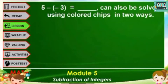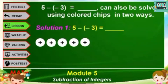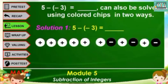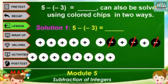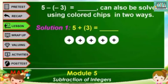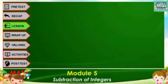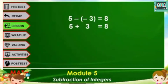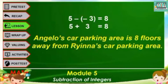For 5 minus negative 3: the first solution is to represent 5 using 5 white chips. To subtract negative 3, remove 3 black chips — but since there are no black chips, add 3 sets of neutral chips. Now remove the 3 black chips, leaving 8 positive chips. The second solution is 5 plus 3: represent 5 white chips, add 3 white chips, giving 8 white chips. Thus, 5 minus negative 3 equals 8, and 5 plus 3 equals 8. Therefore, Angelo's car is 8 floors away from Rihanna's car.